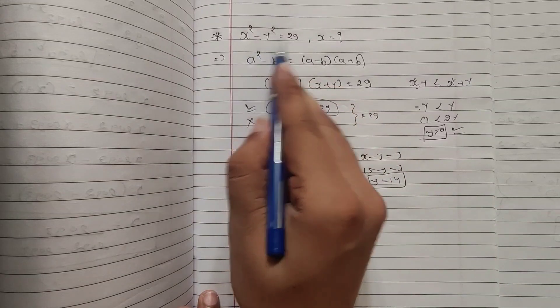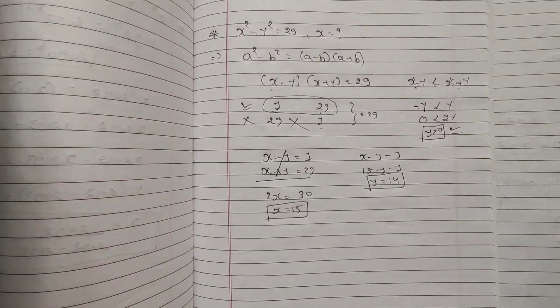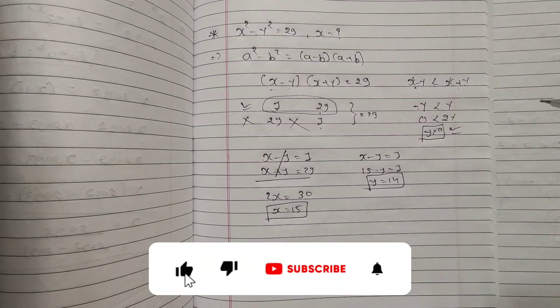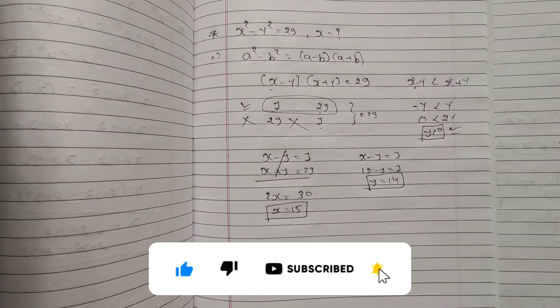15 square minus 14 square, you will get 29. I hope you got it. And if you have any query, any doubt, this is very conceptual question, then make sure you comment me in the comment box. Thank you so much for watching this video.